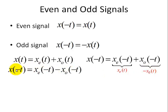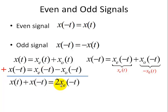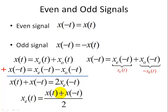Now I can rewrite x of minus t as xe of minus t minus x0 of t. We're going to add these two equations. When we add them, the odd functions go away since minus x0 of minus t equals minus x0 of t, and xe of minus t is simply equal to xe of t, so these two add up. We have two xe of t equal to x of t plus x of minus t. Solving, xe of t equals x of t plus x of minus t divided by 2. This is how you generate your even function — it's x of t added with its reflection x of minus t, divided by 2.